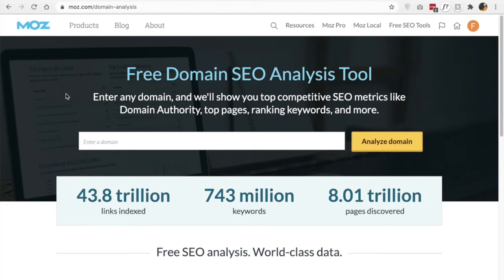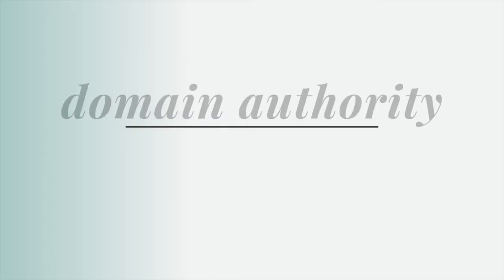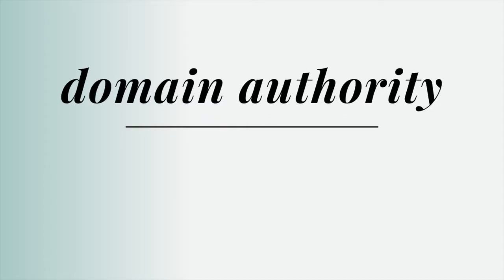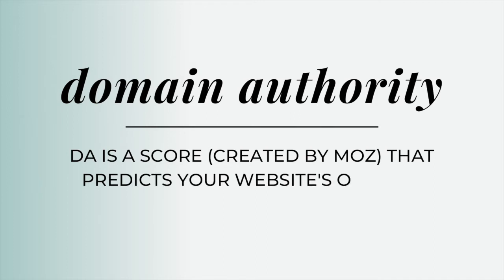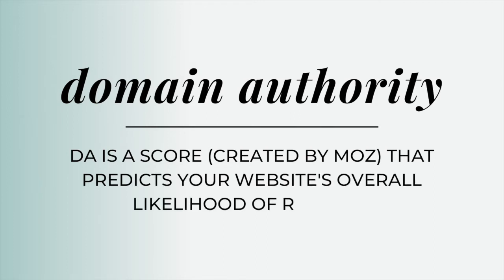This is a quick tutorial on how to find your domain authority and your page authority. Domain authority, or DA, is a score developed by Moz that predicts your entire website's overall likelihood of ranking, on a scale from 1 to 100.